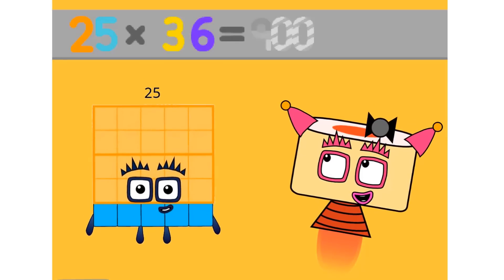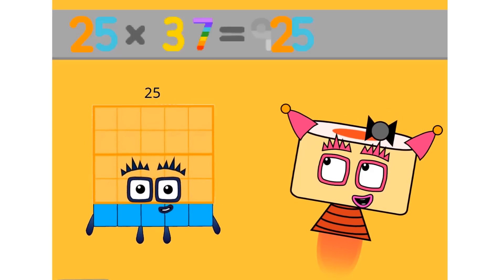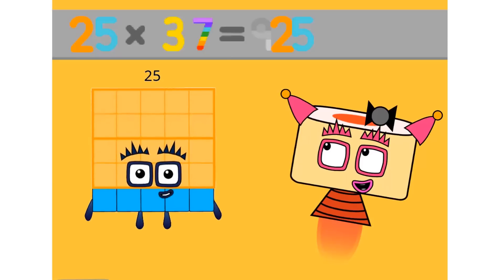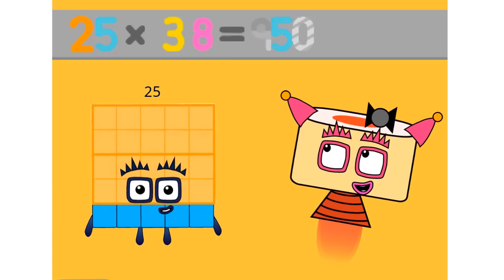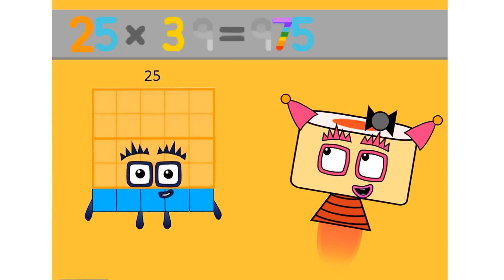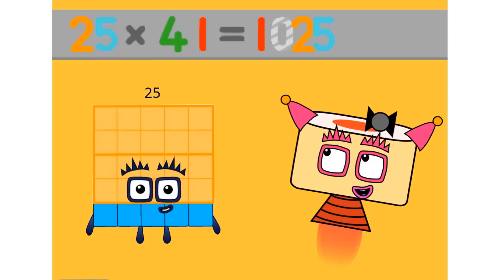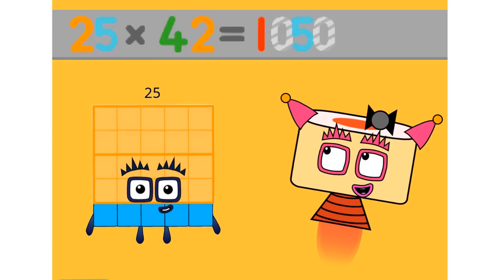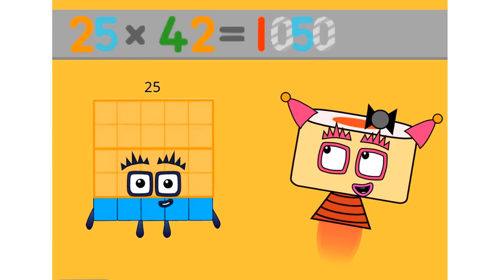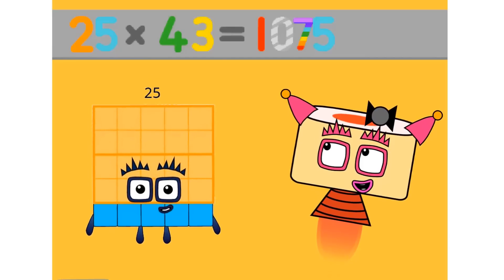25 times 36 equals 900. 25 times 37 equals 925. 25 times 38 equals 950. 25 times 39 equals 975. 25 times 40 equals 1000. 25 times 41 equals 1025. 25 times 42 equals 1050. 25 times 43 equals 1075.